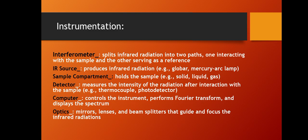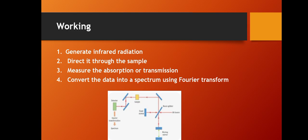The sample compartment holds the sample, which may be solid, liquid, or gas. The detector measures the intensity of radiation after interaction with the sample; different detectors include thermocouple and photodetector. A computer performs the Fourier transform and displays the spectrum. Optics such as mirrors, lenses, and beam splitters guide and focus the IR radiation.